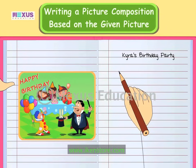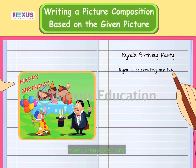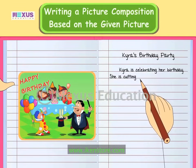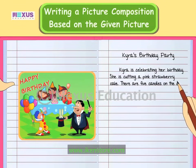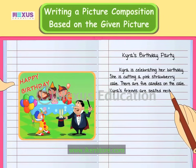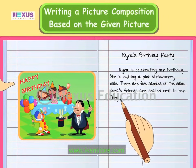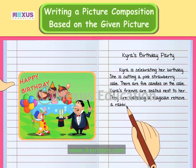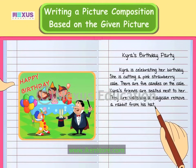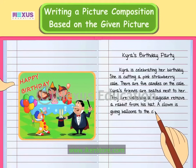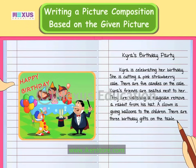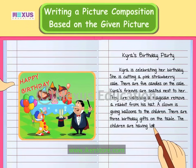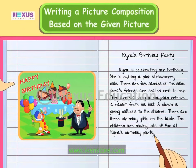Begin with the first sentence a little away from the margin. Kaira is celebrating her birthday. She is cutting a pink strawberry cake. There are five candles on the cake. Kaira's friends are seated next to her. They are watching a magician remove a rabbit from his hat. A clown is giving balloons to the children. There are three birthday gifts on the table. The children are having lots of fun at Kaira's birthday party.